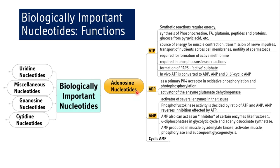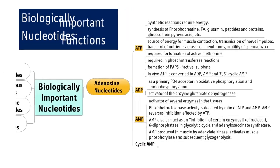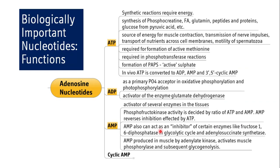The adenosine nucleotides include ATP, ADP, AMP, and cyclic AMP. ATP is an energy source, synthesized from phosphocreatine, fatty acids, glutamine, peptides and proteins, glucose, and pyruvic acids. It is a source of energy for muscle contraction, transmission of nerve impulse, transport of nutrients across cell membranes, and motility of spermatozoa. It is required for formation of active methionine, phosphotransferase reactions, and formation of PAPS. In vivo, ATP is converted into ADP, AMP, and 3',5'-cyclic AMP.